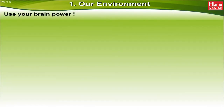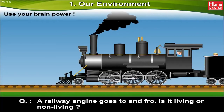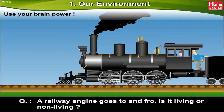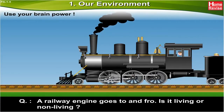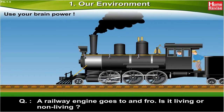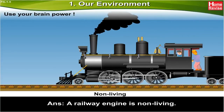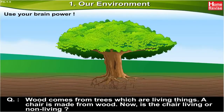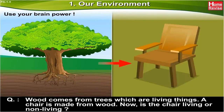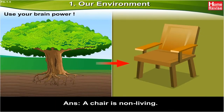Use your brain power. A railway engine goes to and fro — is it a living or non-living thing? A railway engine is a non-living thing. Wood comes from trees, which are living things. A chair is made from wood — now, is the chair living or non-living? A chair is a non-living thing.